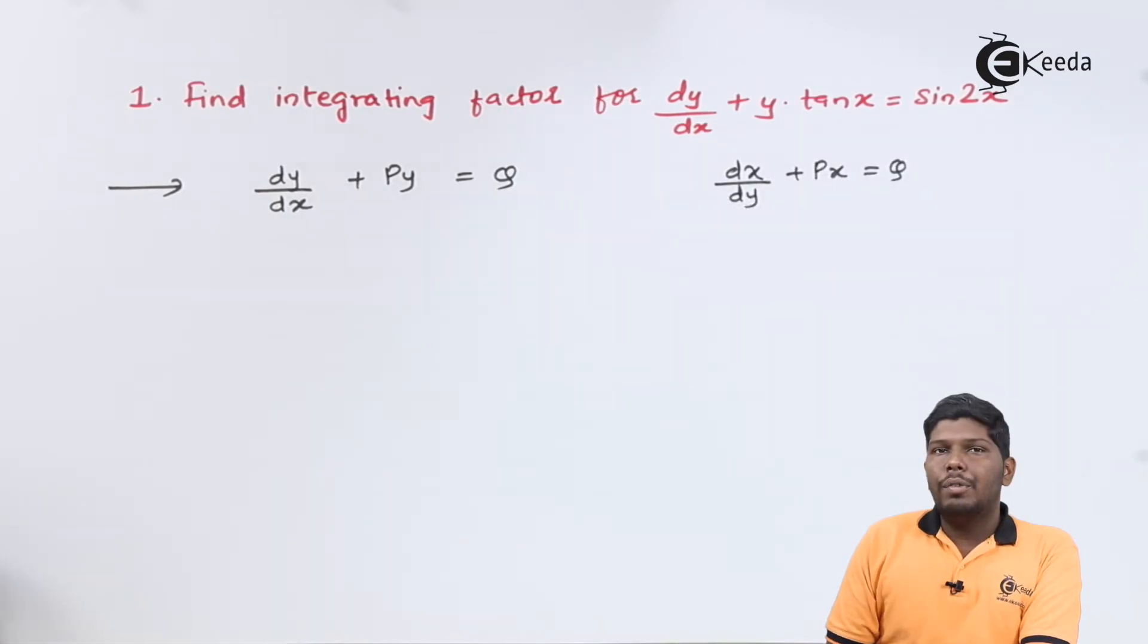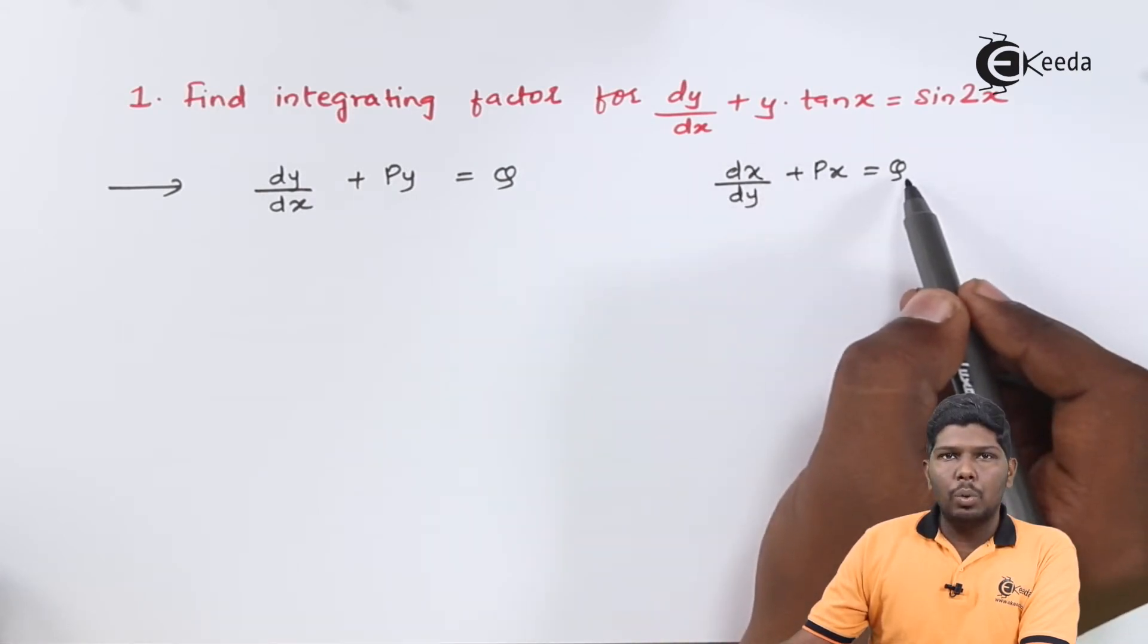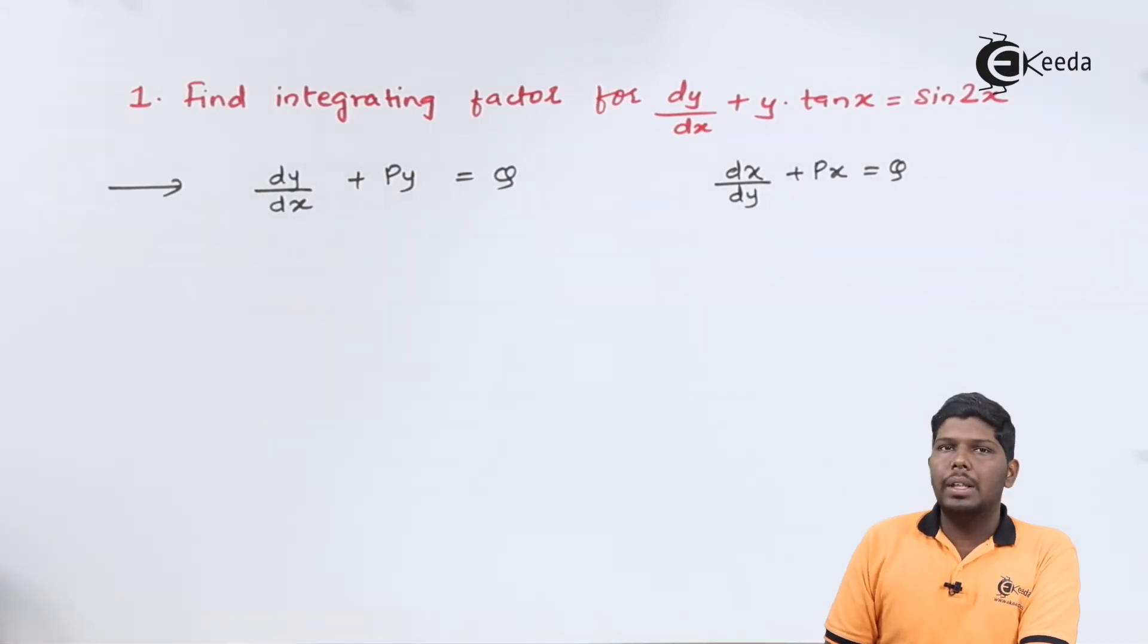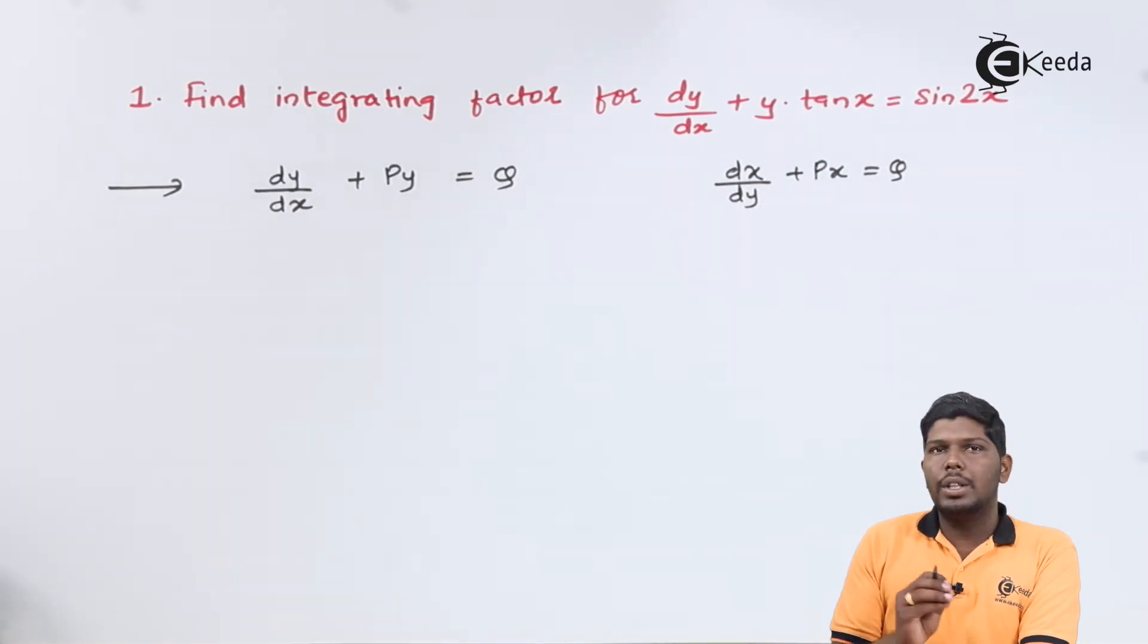The other form of linear differential equation is dx/dy + Px = Q, where the power of x should be compulsory one, and P and Q will be constants or functions of y.